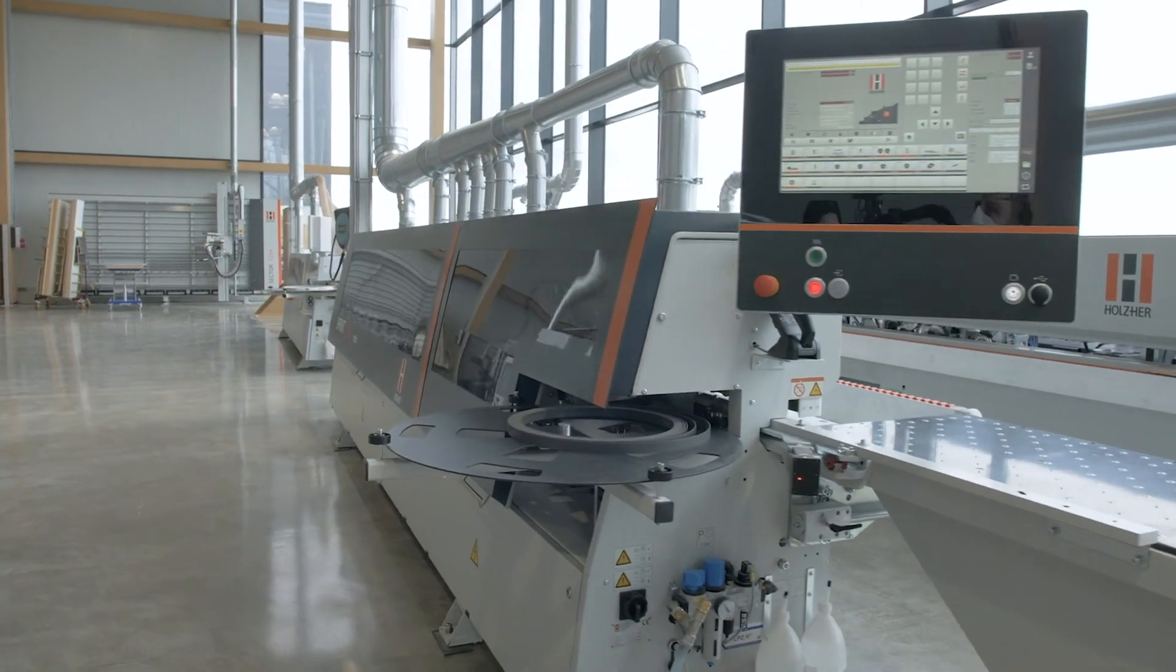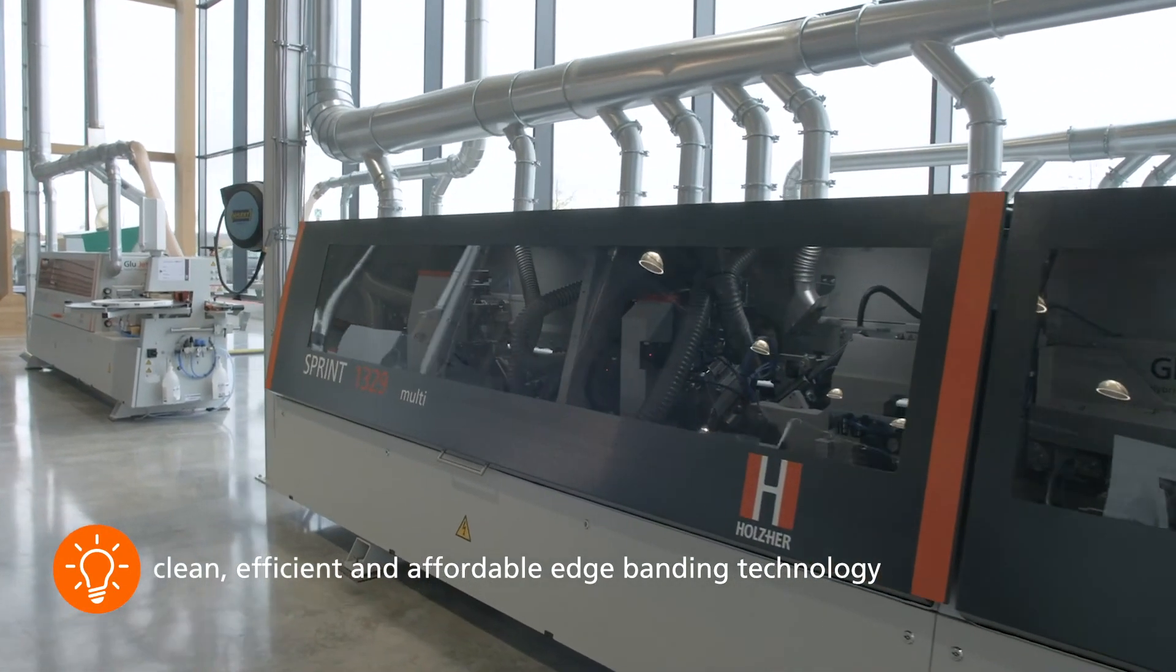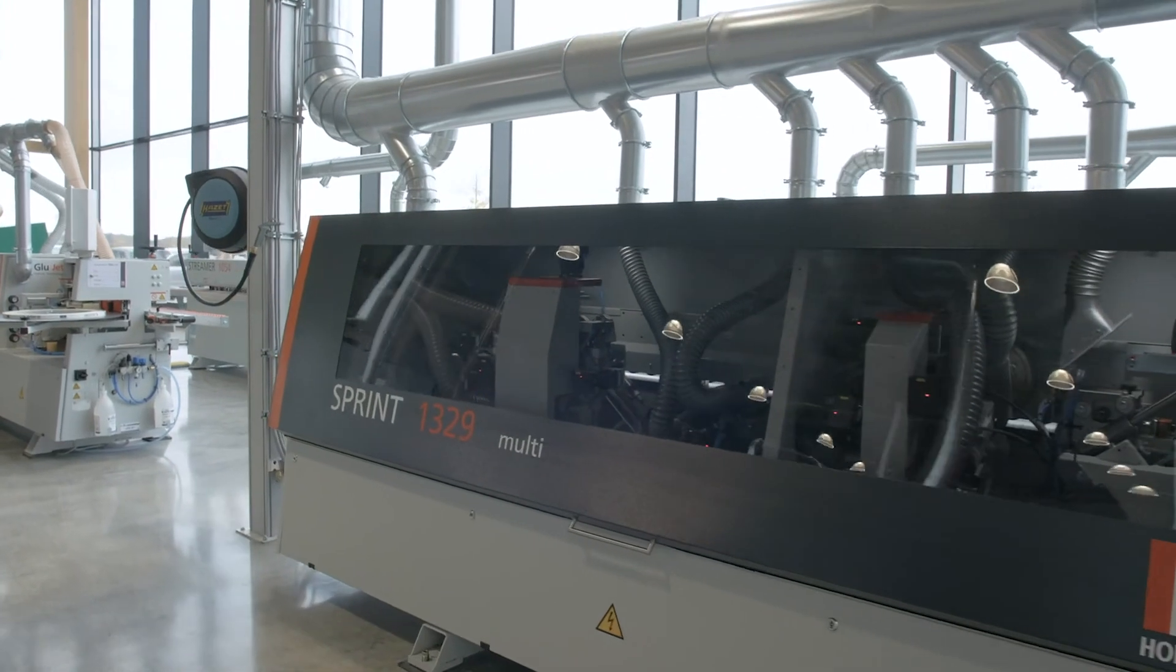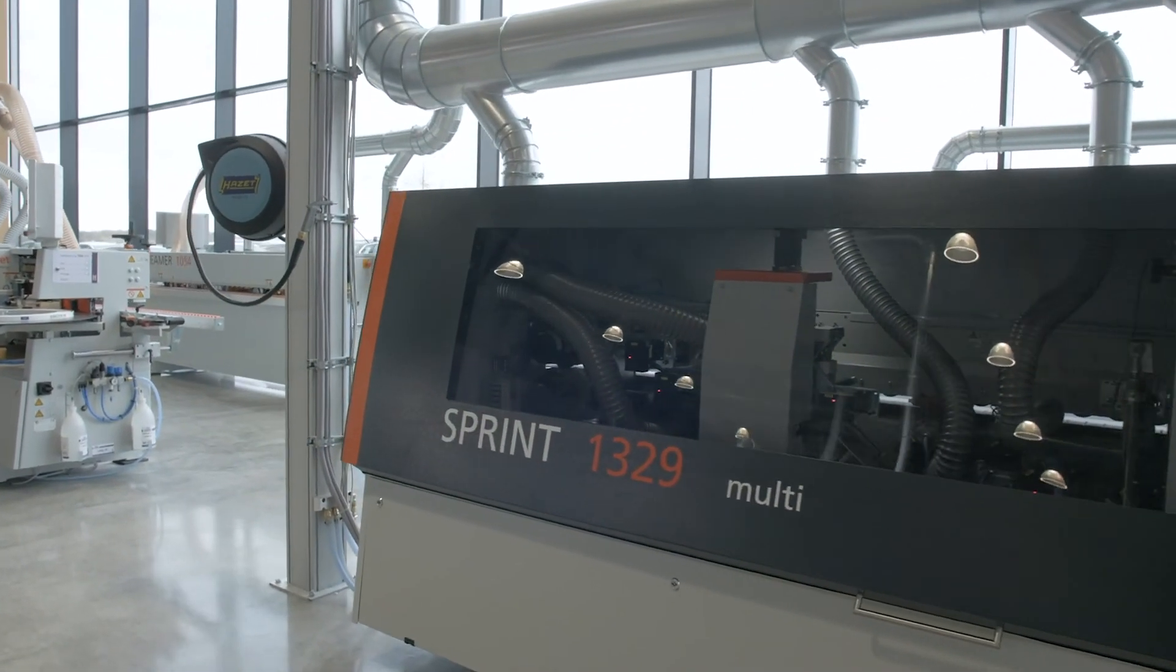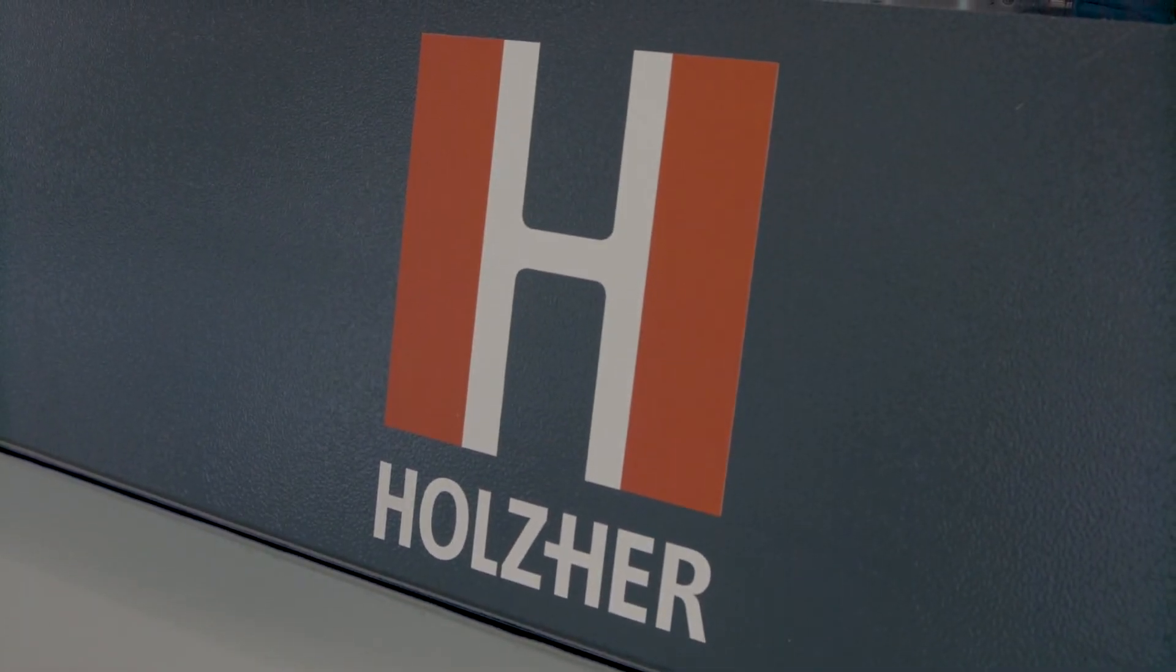The edge banding machine is decisive for the high quality appearance of your furniture. No longer live with compromises or encrusted glue melting basins. Get clean, efficient and affordable edge banding technology at the highest level in your home with the Sprint.